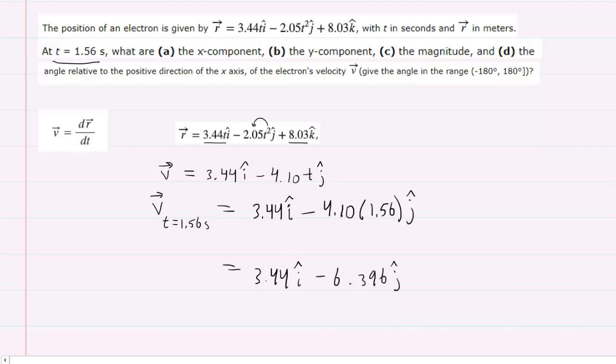So for part a, when they ask you for the x component of the velocity, the answer is what we see here in the i hat direction, or the x direction. So that will just be 3.44 meters per second.